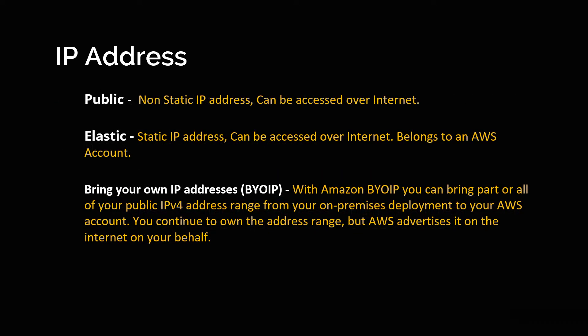The next type of IP address is the public IP address. A public IP address is basically assigned to an EC2 instance when you want it to be accessed over the internet. These IP addresses are non-static in nature. When you spin up an EC2 instance, it gets assigned a public IP address. However, this IP address is non-static — if you stop the instance and start it again, the public IP address will change.